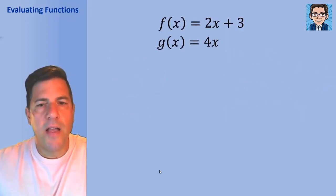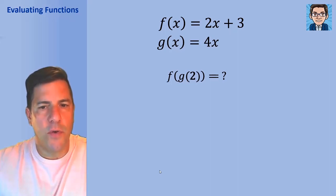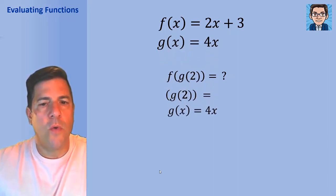Now let's look at a composite function. If we have two functions, one named f and one named g, where f of x is 2x plus 3 and g of x is 4x, and I ask you to find f of g of 2—this is a composite function. We work from the inside out, so we first have to find g of 2. We take the function g, which is 4x, and put 2 into it. 2 times 4 gets us 8, so g of 2 equals 8.